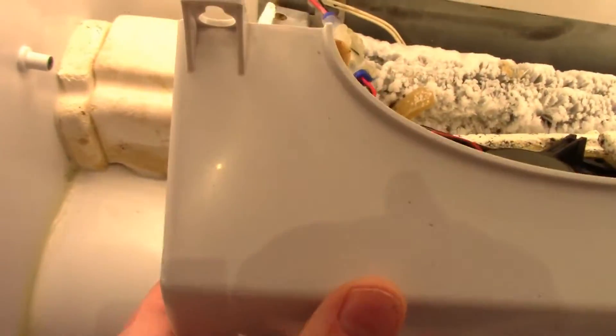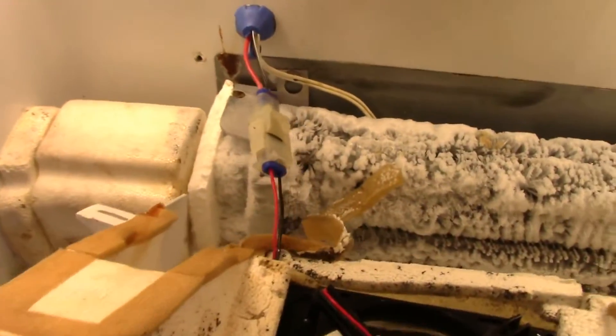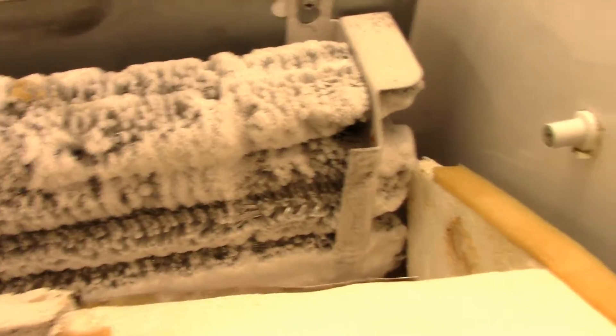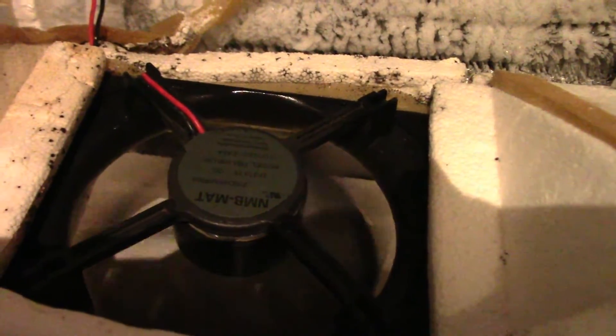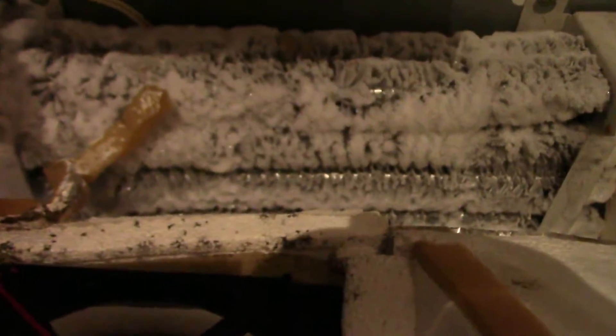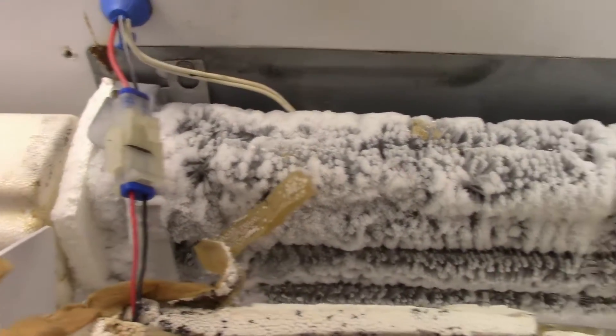So I'm going to have to get a hairdryer out to melt this. Okay, so I finally got it out, heat it up with a blow dryer. As you can see, just totally caked, and there's the fan that is pulling air across that evaporator and then up through the ductwork. I'm going to have to thaw this entire thing out to go any further.